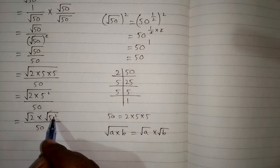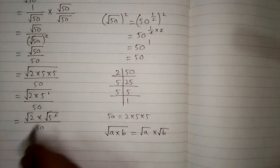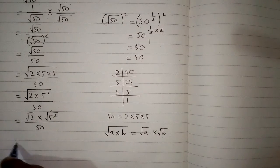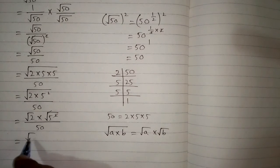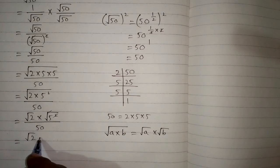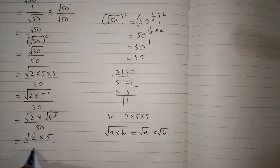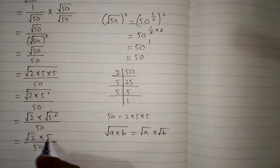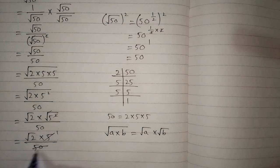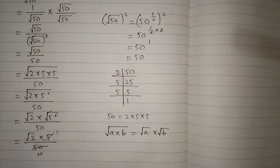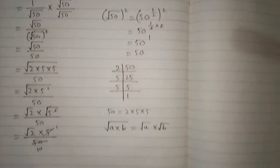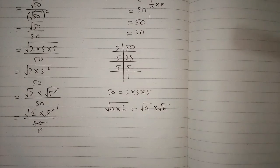We can cancel this square root and this square, giving us square root of 2 multiplied by 5 upon 50. We can cancel this 5 and this 50, so we have 10 in the denominator. The final answer is square root of 2 upon 10.